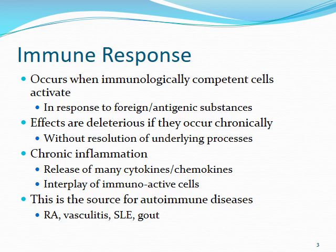With chronic inflammation, there's going to be a release of many different cytokines and chemokines, and a lot of interplay with different immunoactive cells. This chronic inflammatory process is really where we see the source of autoimmune disorders like RA, vasculitis, lupus, and even gout to some degree.